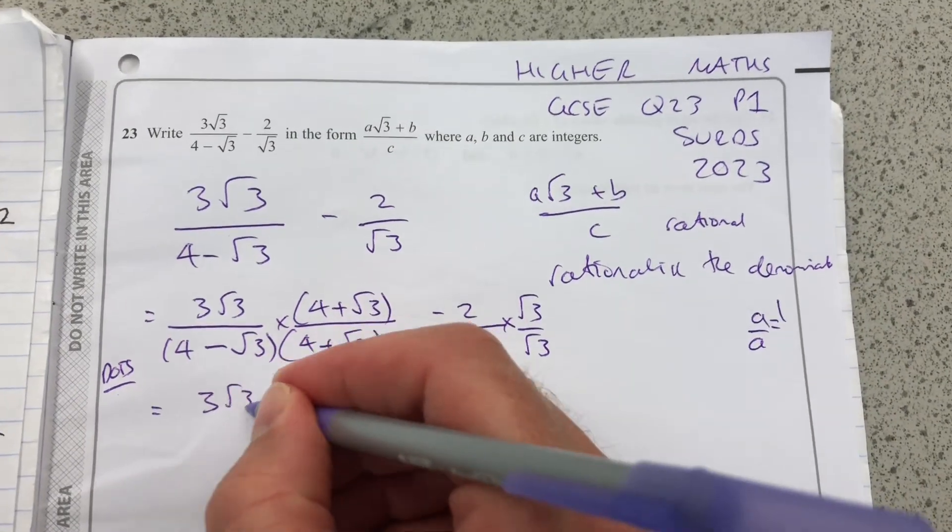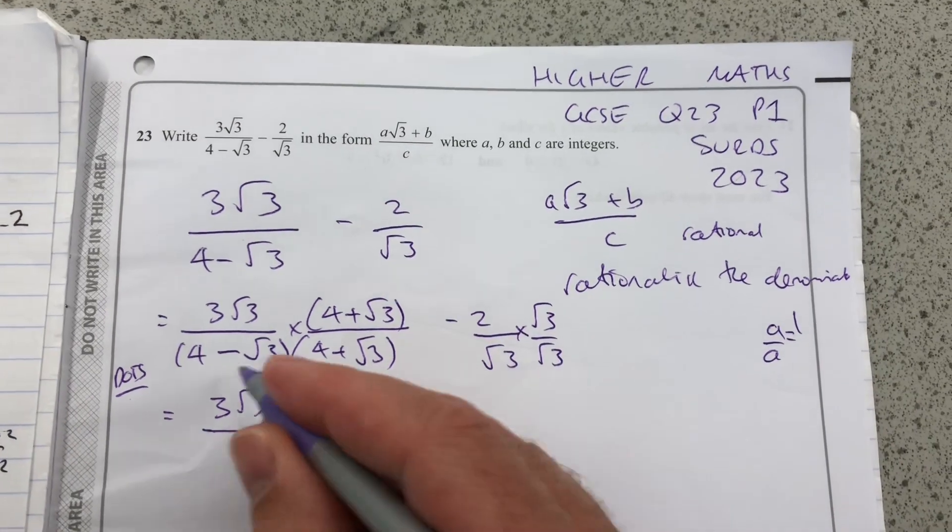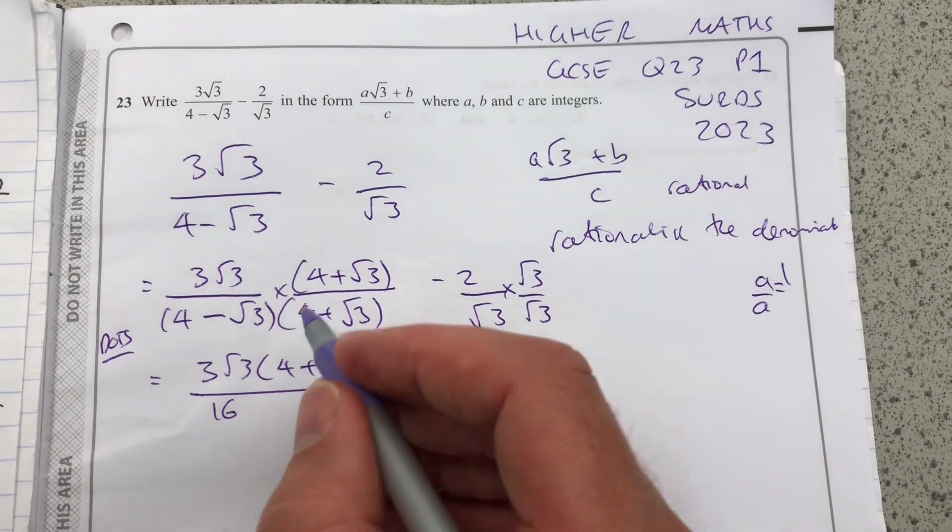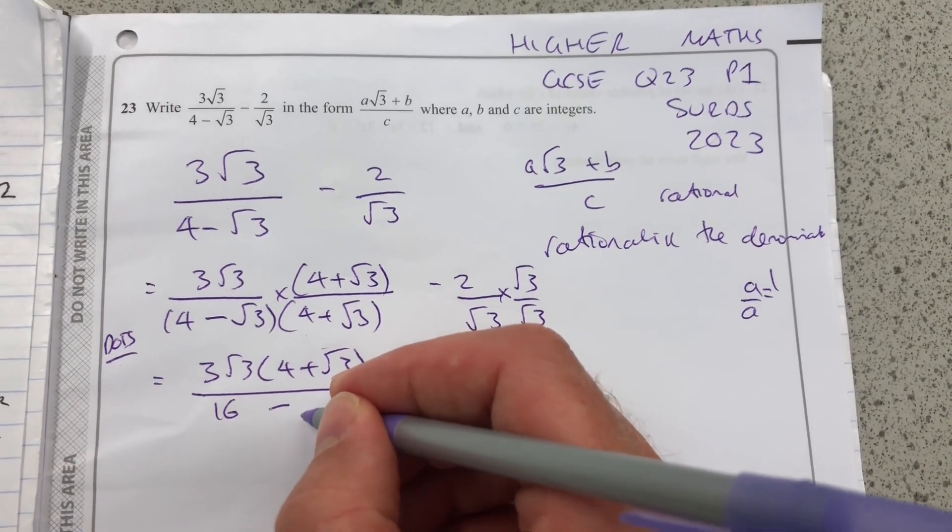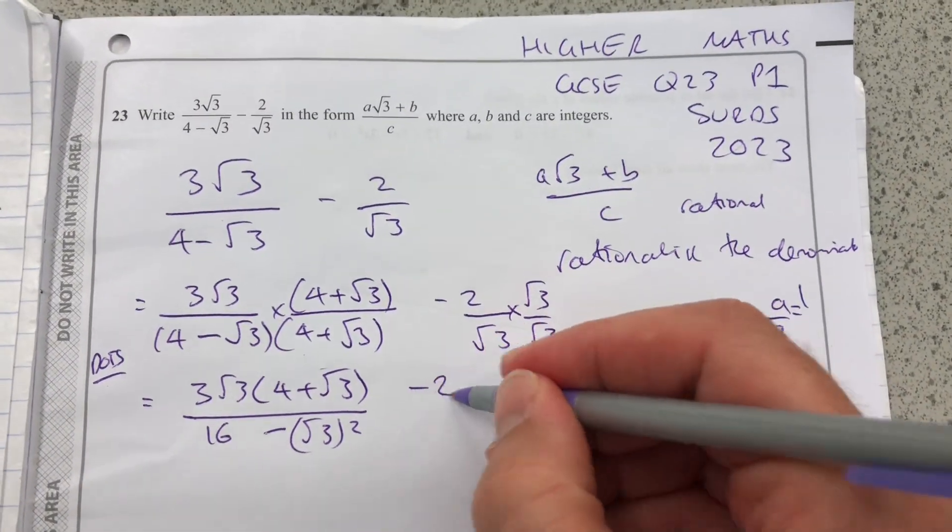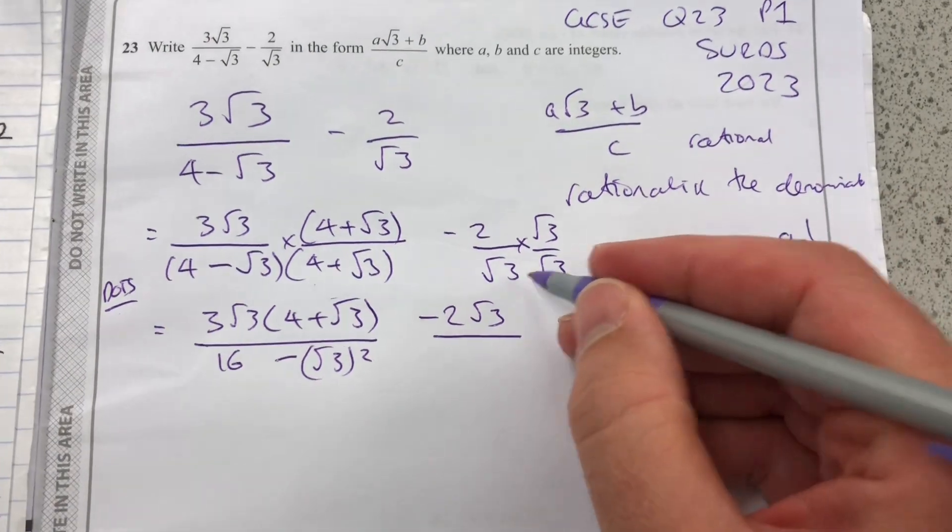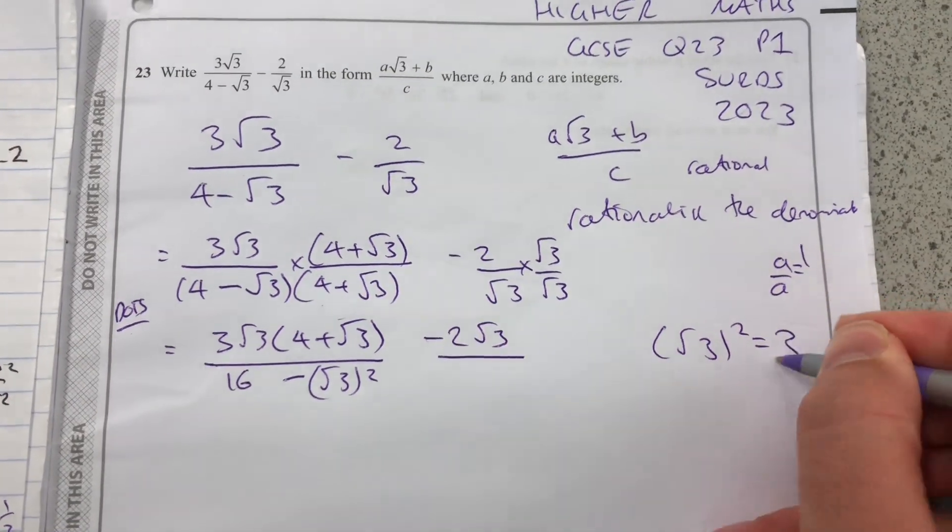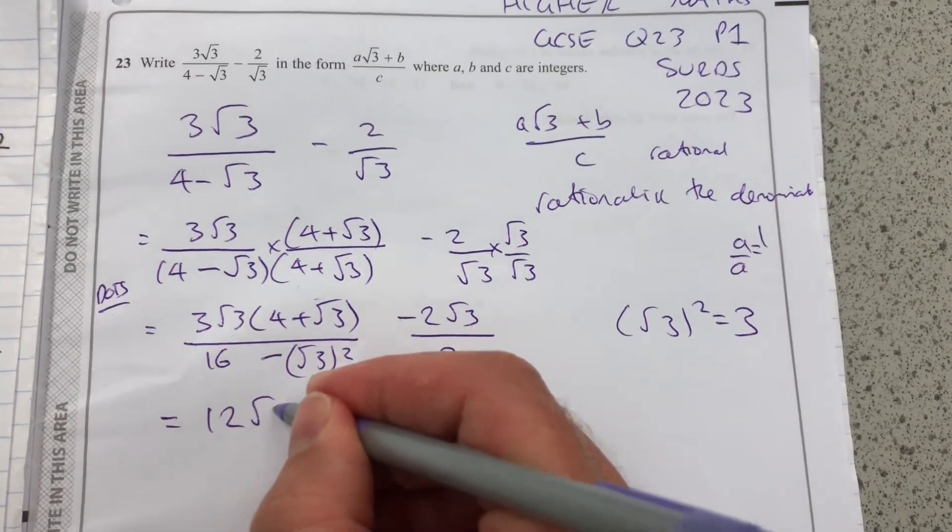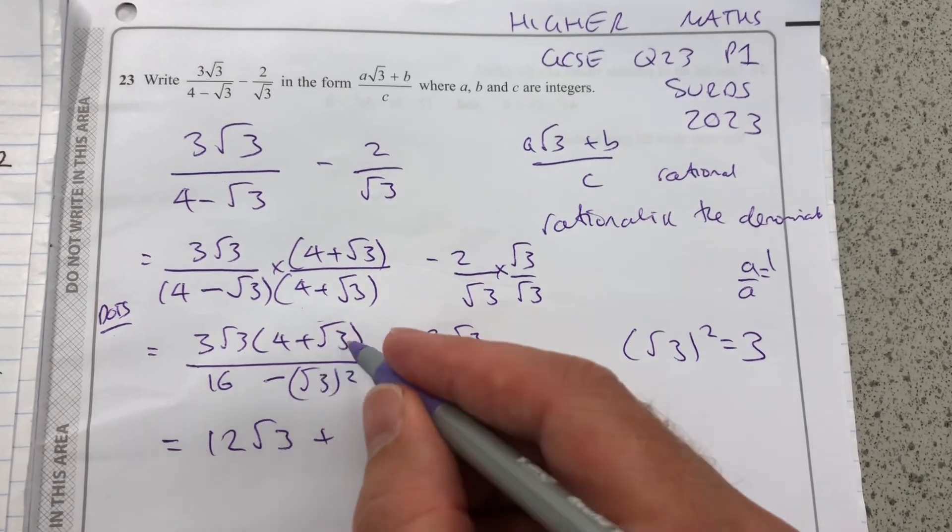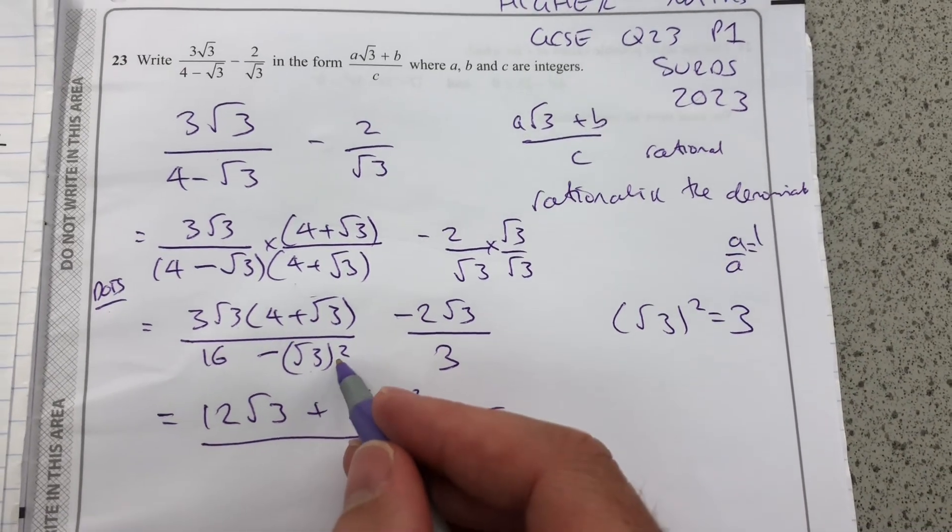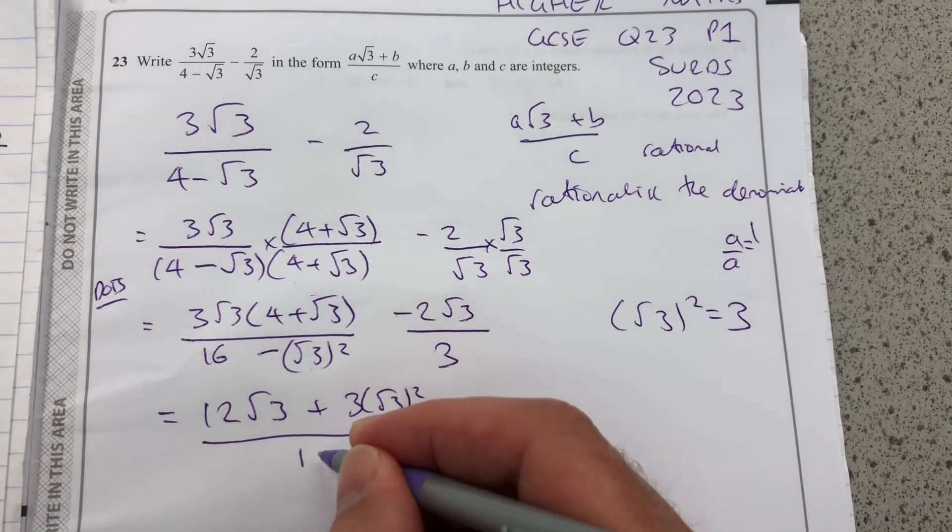So now I'm going to have 3 root 3 times 4 plus root 3. 4 times 4 is 16. 4 root 3 minus 4 root 3 is going to cancel. I'm left with minus root 3 squared. So now I'm going to have 12 root 3 plus 3 times root 3 squared. Root 3 squared is 3, and 16 minus 3 is 13.